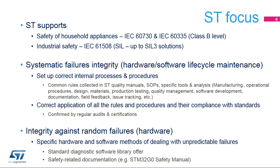Systematic failures are predictable, and their avoidance and monitoring are based on practical experience gained in the industry. Systematic failures can be avoided mainly by applying correct internal processes throughout a product's life cycle. These requirements are defined in specific internal quality documentation. Regular inspections and audits ensure that these internal rules are applied and comply with the recognized standards.